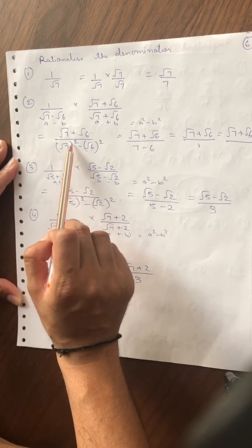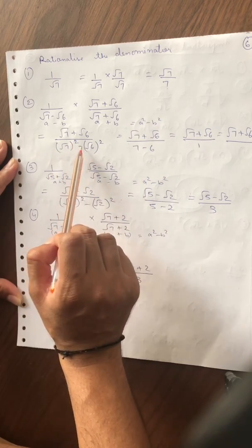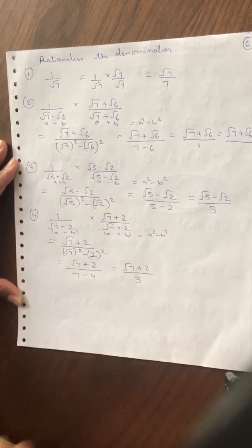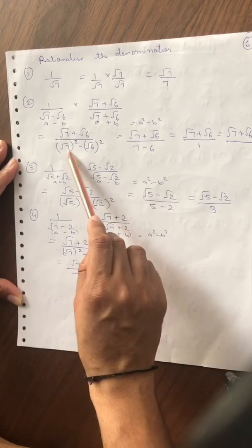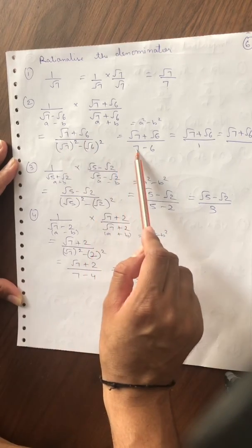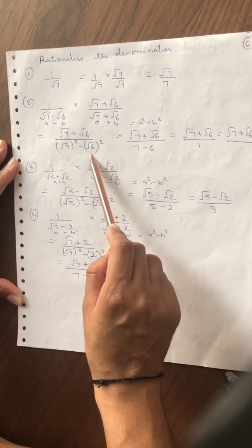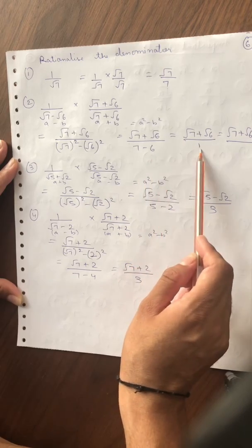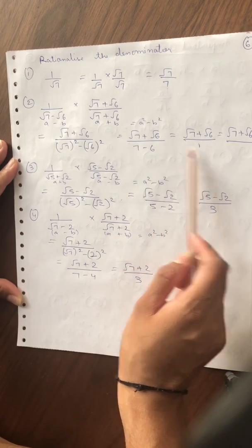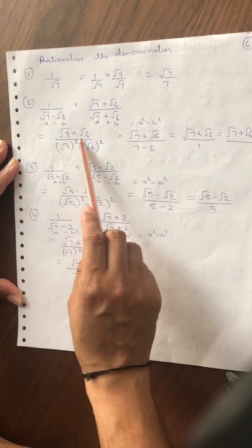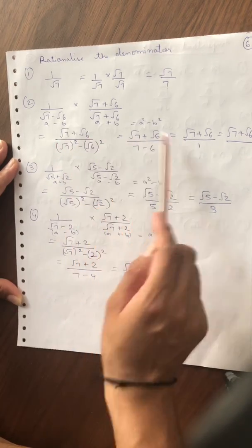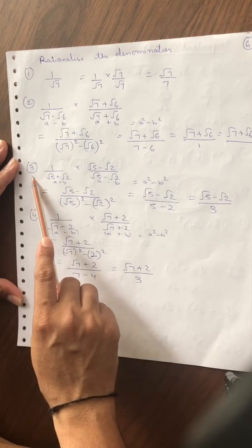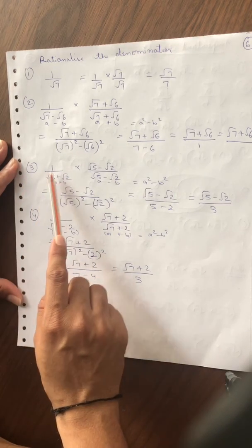तो यह हो जाता है root 7 square minus root 6 square, यानी 7 − 6। Root 7 का square होता है 7, root 6 का square होता है 6। तो 7 minus 6 क्या हो जाएगा — 1। और ऊपर root 7 plus root 6 आ जाएगा।